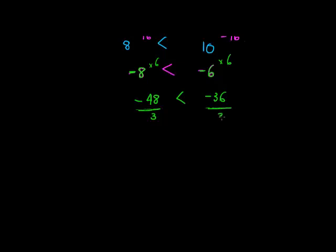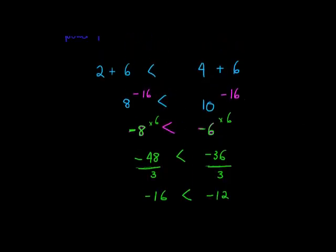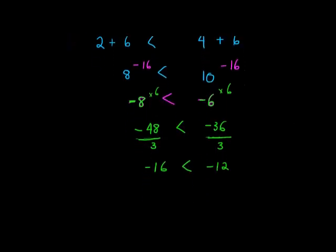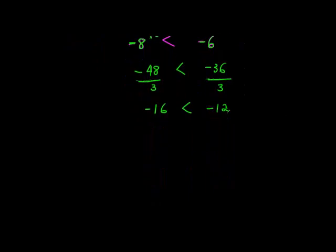How about dividing by a positive number? Let's divide both sides by 3. Negative 48 divided by 3 is negative 16, and negative 36 divided by 3 is negative 12. Is negative 16 still smaller than negative 12? It is still true. So far we've added, subtracted, multiplied, and divided with positive numbers — the sign didn't change in any of those cases.